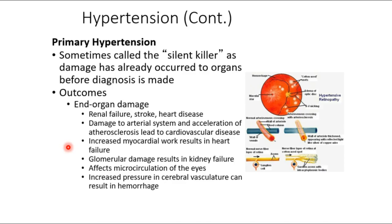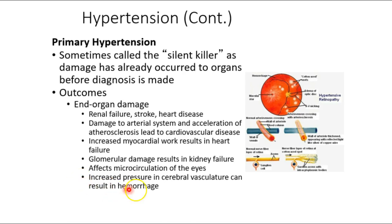Hypertension is a silent killer. The key issue is end organ damage. Hypertension impacts capillary beds — which are literally everywhere — and long-term high blood pressure causes damage to those beds. The difference between hypertensive urgency and hypertensive emergency is end organ damage: kidney failure, heart failure, retinal blood vessels bursting — for example, diabetic retinopathy.